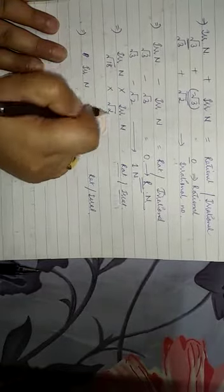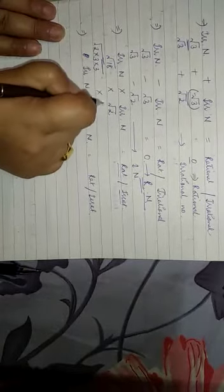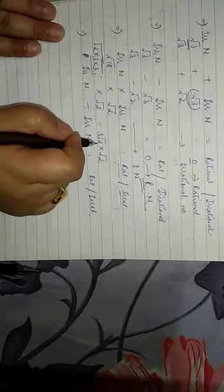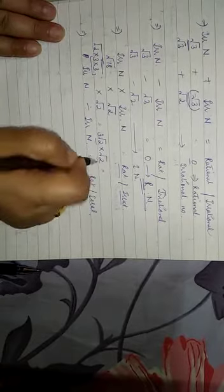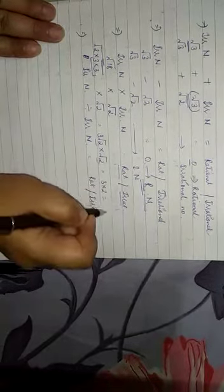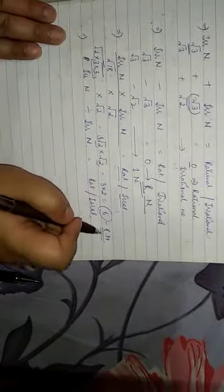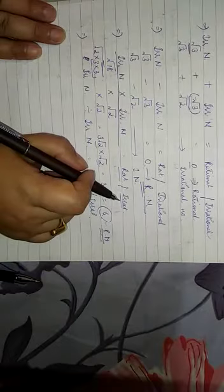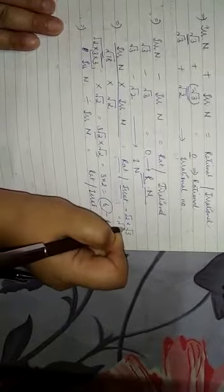Let's take the example of 18 into root 2. We can write 18 as 2 into 3 into 3, then factor it as 3 root 2 into root 2. Root 2 into root 2 gives 2, and 3 into 2 gives 6. So 6 is a rational number. This shows that irrational times irrational can be rational. But root 2 into root 3 gives root 6, which is also irrational — so the result can be irrational as well.